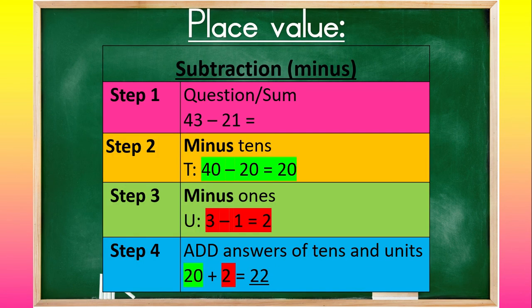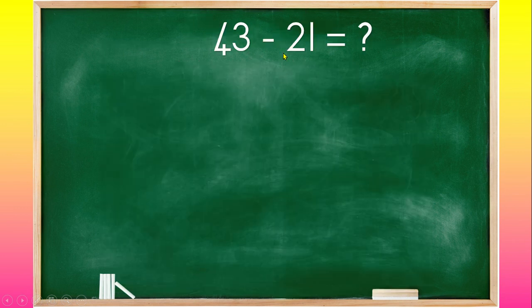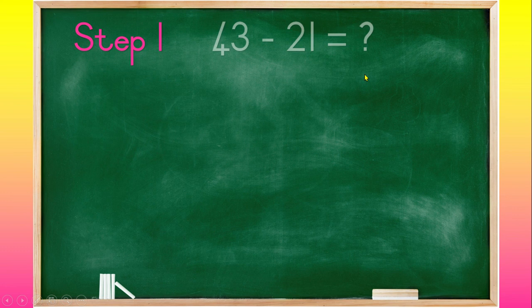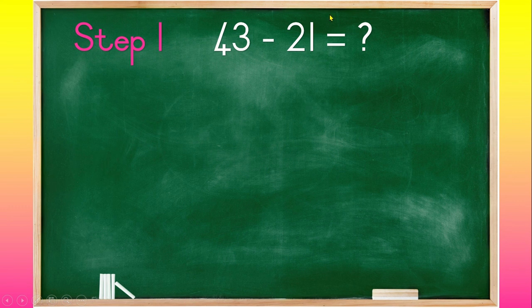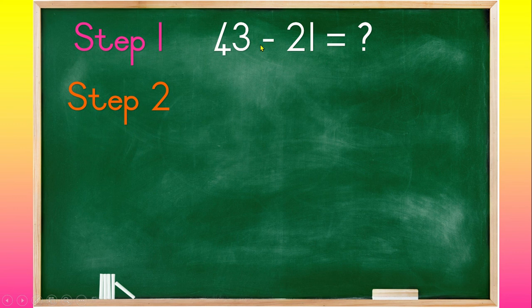Now let's look at the place value of subtraction. First we have the question or the sum. We have to look at it. We see it's 43 minus 21. Then we do our step 2, which is to take away the tens, to take away the ones, because we are busy with subtraction. Then to add the answers. So 43 minus 21 equals what? Step 1, it's 43. So it's 4 tens, which is 40 and 3 ones. 2 tens, 20 and 1 unit. Step 2 is to take away the tens. So 40 minus 20 equals 20. Because 4 take away 2 equals 2. Then we add the 0, it's 20.